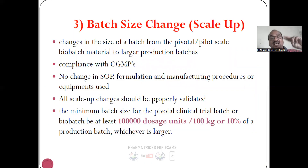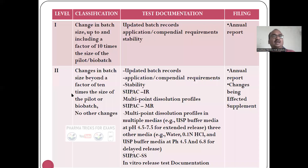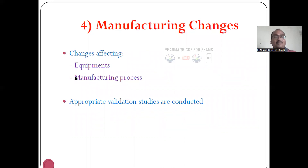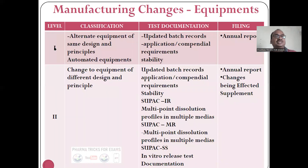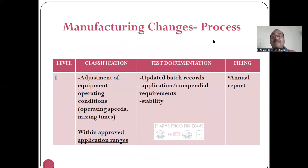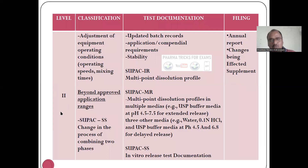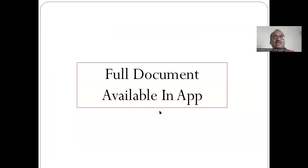Batch size and scale up is the third category — changes in the size of the batch with no change in SOP. Level one and level two changes apply here with respective examples and documentation requirements. Manufacturing process changes form the fourth category — you want to change the equipment or manufacturing process, including approved validation. Level one and level two changes and documents are defined. Process changes at levels two and three also have defined documentation. The full document for all SUPAC categories is available in the app. That concludes this session.